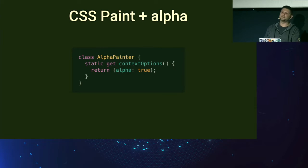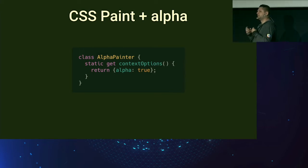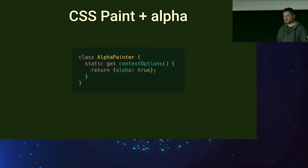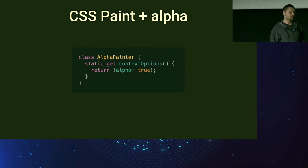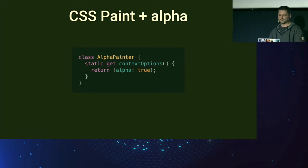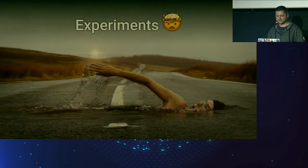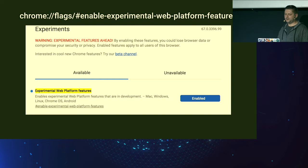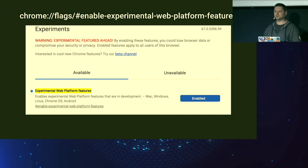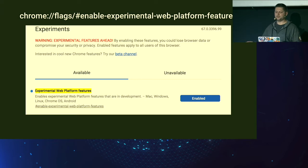There's another static property called contextOptions. For now it has only one option: alpha. If we don't care what's rendered behind the element we're painting on, we can skip the composition stage of the paint worklet, giving us an additional performance boost. By default, alpha is set to true. Some demos require a flag in Chrome — for example, input arguments and custom properties are still experimental, so you need to enable the experimental web platform features flag. All demos are on GitHub — you can check them out, fork, and play with them.